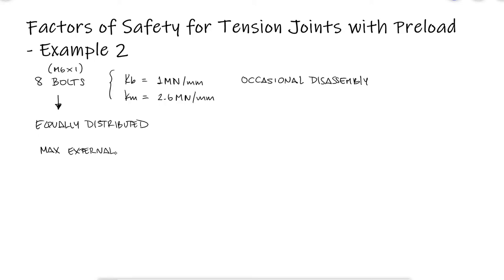What is the maximum external load Pmax that can be applied to the entire joint without exceeding the proof strength of the bolts? What is the maximum external load Pmax that can be applied to the entire joint without causing the members to come out of compression?